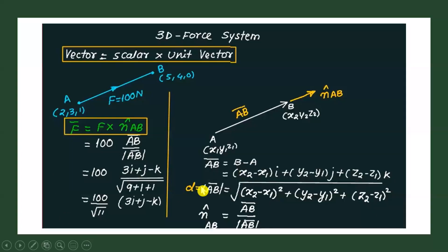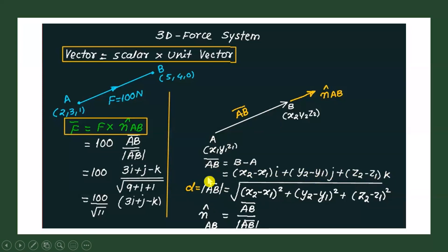To find the distance between points A and B, the distance D is the modulus of vector AB. So the modulus of AB vector is the square root of (x2 − x1)² + (y2 − y1)² + (z2 − z1)².